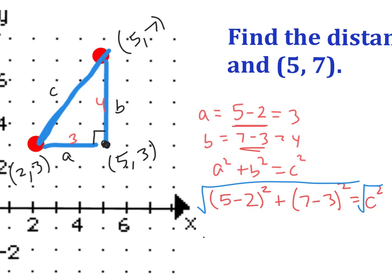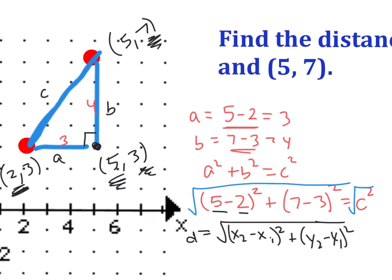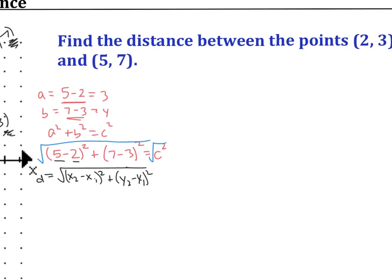Our distance formula is d equals the square root of (x2 minus x1) squared plus (y2 minus y1) squared. Here, 2 and 5 are x-values, so we subtract them to get the length of 3 and square it. Then 7 and 3 are y-values, so we subtract them for our b value. When finding the distance between (2, 3) and (5, 7), we subtract the x-values, subtract the y-values, square them, and proceed.